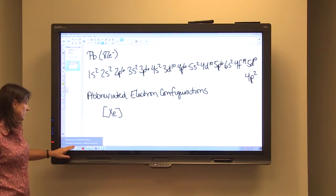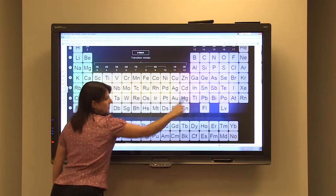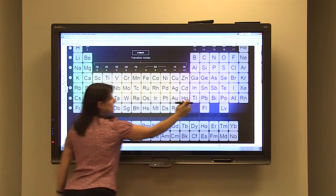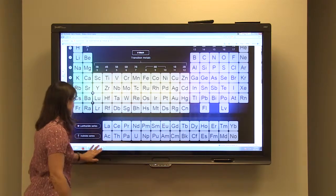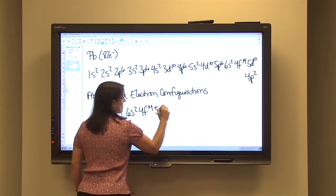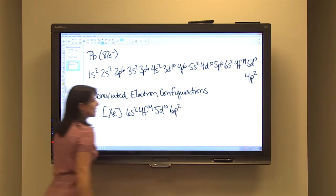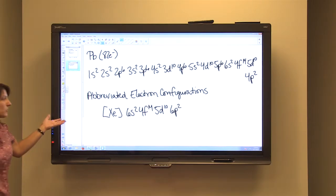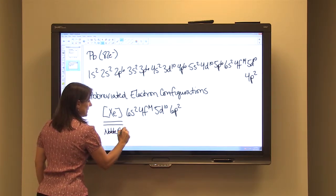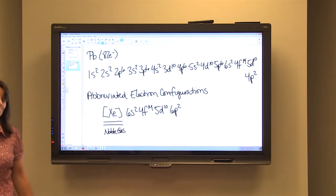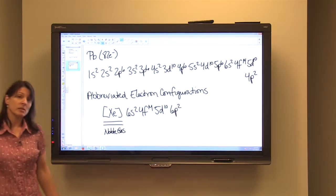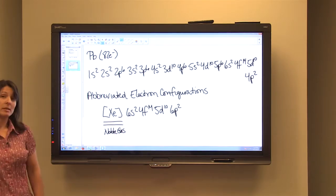And then you will continue your electron configuration on the row that your element is on. So we are going to do 6s², 4f¹⁴, 5d¹⁰, 6p². And that would be how you would write the abbreviated electron configuration for lead. So the key here is that it must be the noble gas that precedes the element. It can't just be any element from the periodic table before it. It just has to be a noble gas. So that is how you can explain the organization of electrons using electron configuration or abbreviated electron configurations.